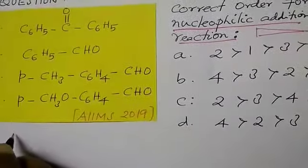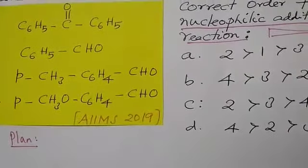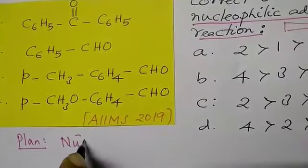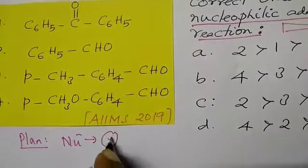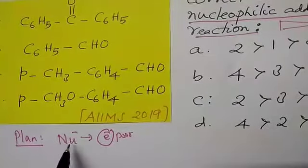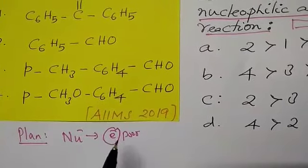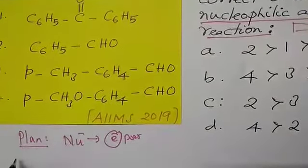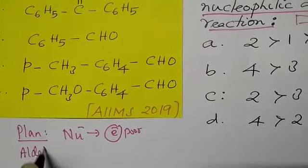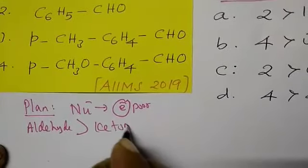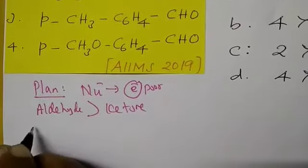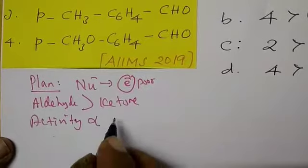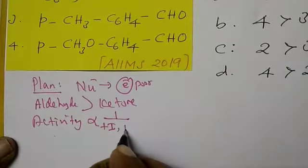Now let us go and see the knowledge for the plan. What is the meaning of nucleophilic addition? The nucleophile moves towards the center where it is the electron poor. The nucleophilic species is a negative type and attacks the species which is electron poor — the reactivity increases. Now comparing the main thing: always aldehyde is more reactive than ketone. Activity is directly proportional to the minus I and minus M effects, or inversely related to the plus I and plus M effects.